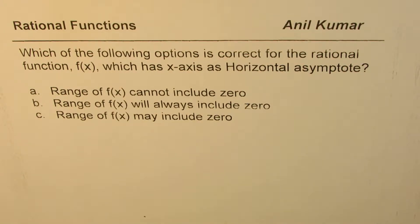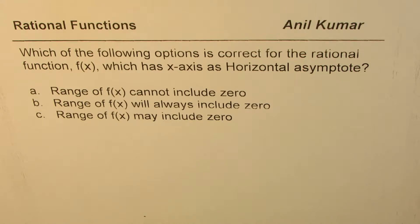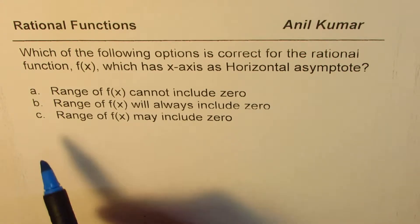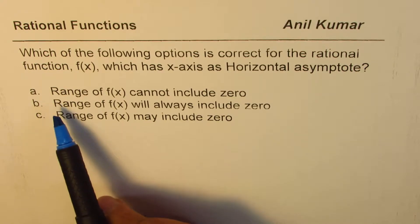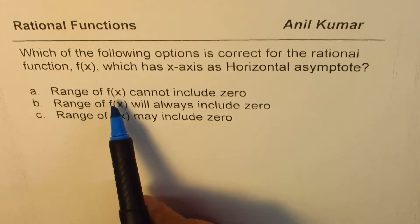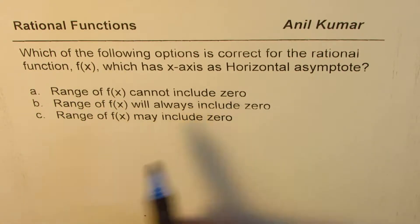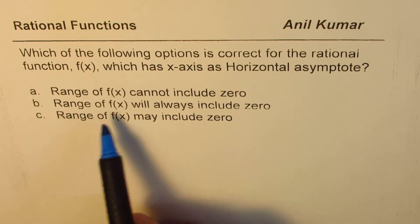I'm Anil Kumar sharing with you a very important question on rational functions. The question is: which of the following options is correct for the rational function f of x which has the x-axis as a horizontal asymptote? We are given three options: the first one is the range of f of x cannot include zero, the second is the range of f of x will always include zero.